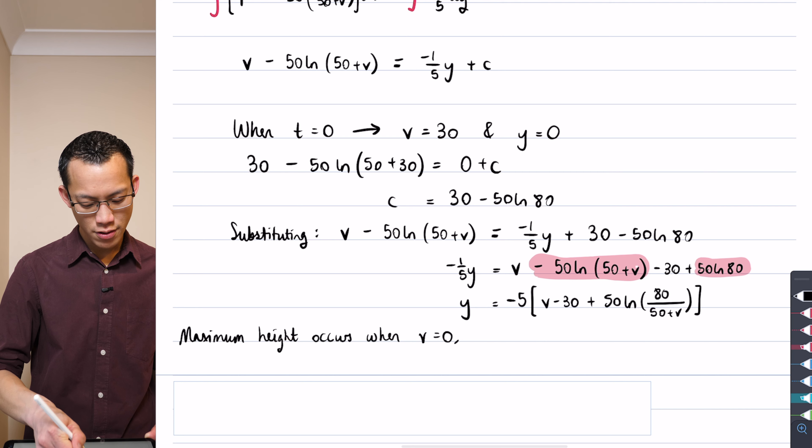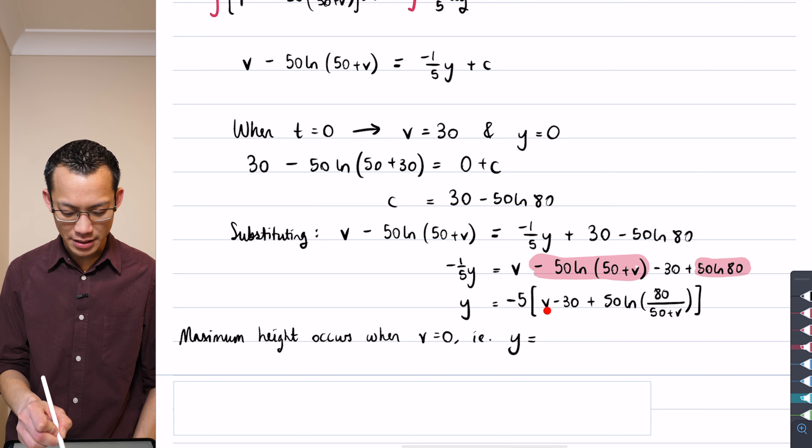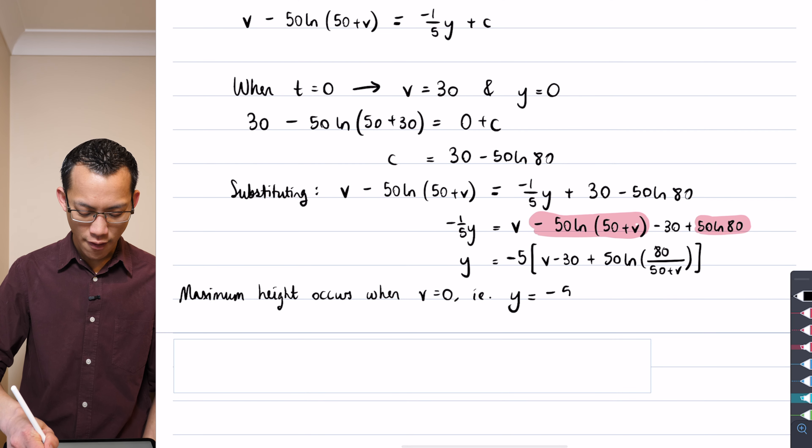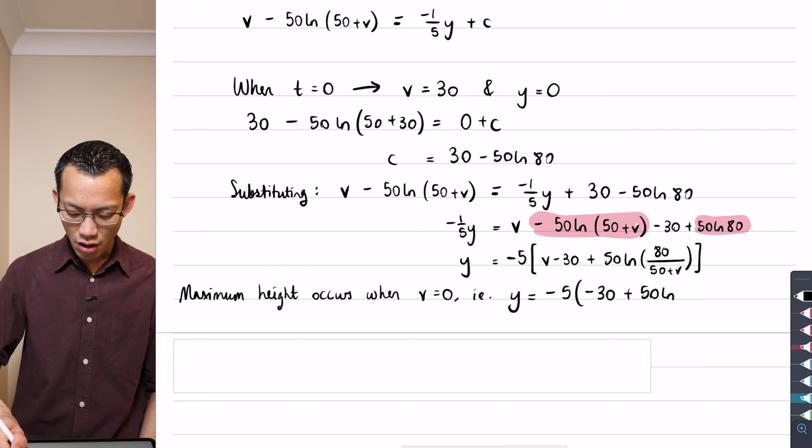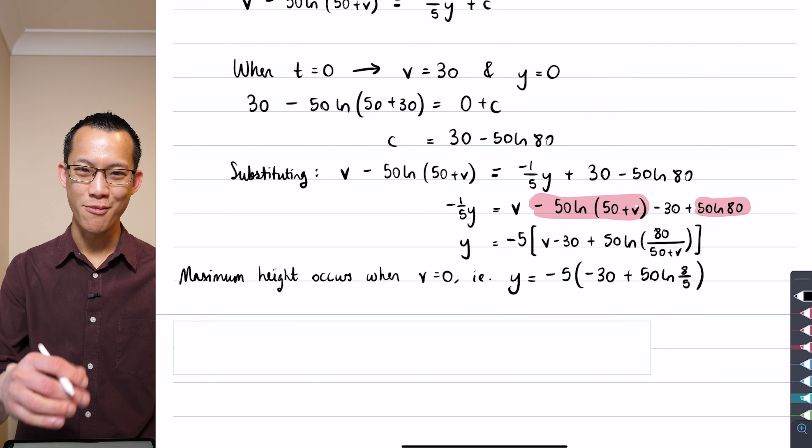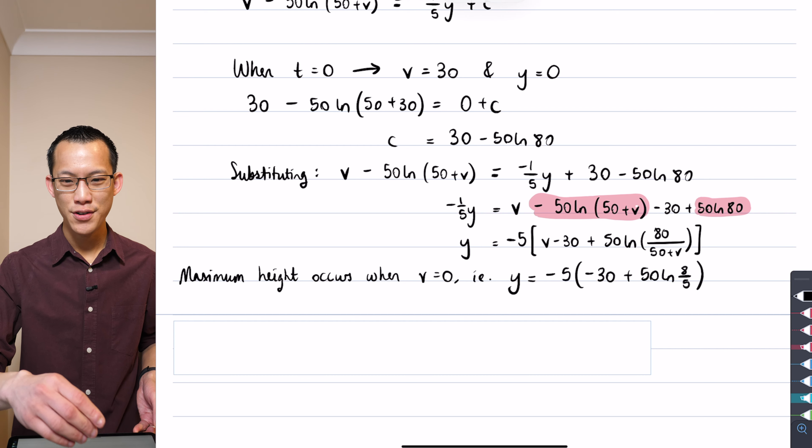So what I can do is I'll say maximum height occurs when v equals zero, i.e. when y is equal to, and just have a look at what you get here. That term is going to be zero and that term's going to be zero, so it looks to me like I get minus five outside of that minus 30 is still hanging around, the plus 50 is there, and then I've got a log of eight over five because 80 over 50 is going to simplify to that. So can you go and pop into the chat once you have reached for your calculator, maybe you've already done it, and you should get a value out for that.